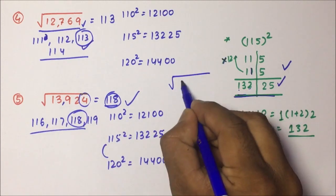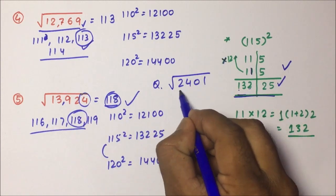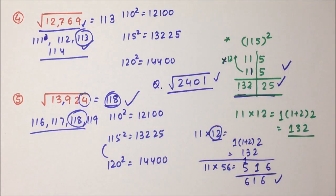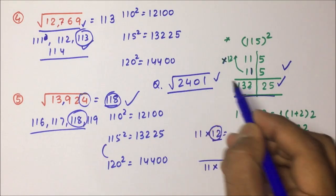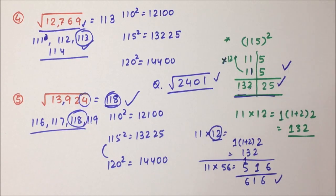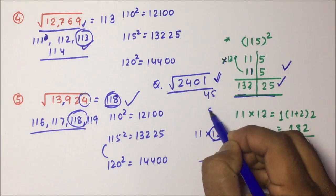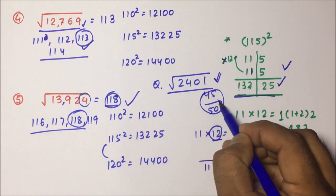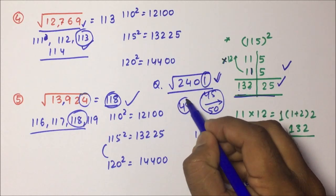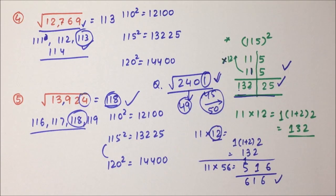Let's take one more example — 2401 — and I'm going to solve it in mind. The square root is between 40 and 50, because 40 squared is 1600 and 50 squared is 2500. 45 squared is 2025, so the square root is between 45 and 50. Which number in that range, when squared, gives 1 at the end? That is none other than 49. So I have calculated this square root in mind, without pen and paper.